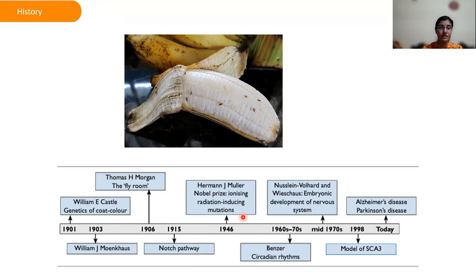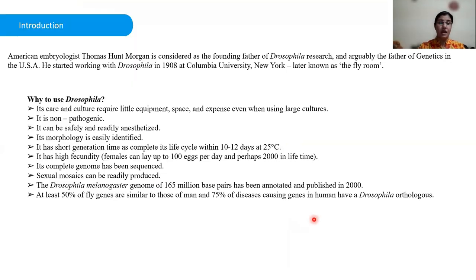Its importance for human health was recognized by a Nobel Prize won by Lewis, C.N. Wollard, and Wishtros in 1995. One could wonder which features of Drosophila contributed to its historical importance as the best model organism for studying genetics.